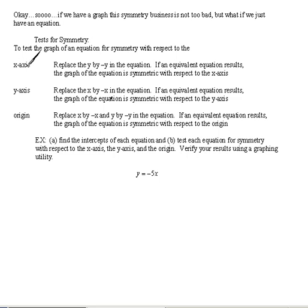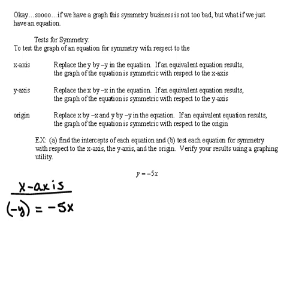It says replace the y with -y in the equation. If an equivalent equation results, then we have x-axis symmetry. So I'm going to try x-axis symmetry first. It tells me to replace y with -y. So in my equation we're going to put in -y = -5x. I'm simply replacing the y value with -y. We don't really need the parentheses there because they don't do anything.